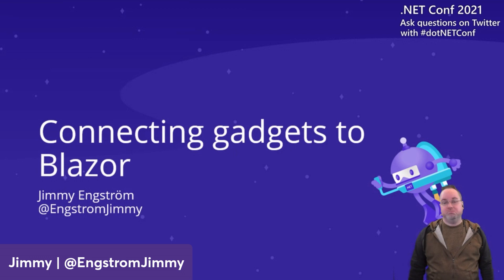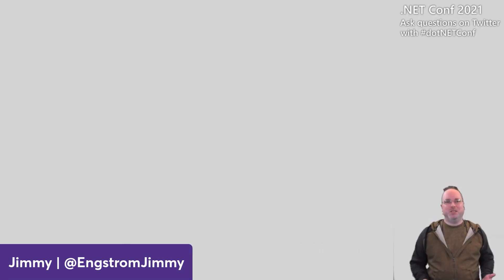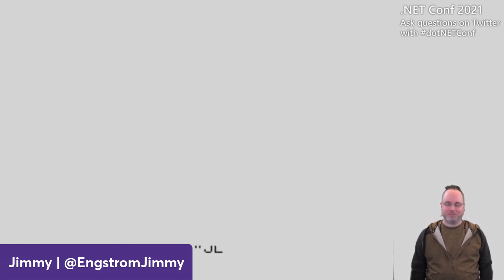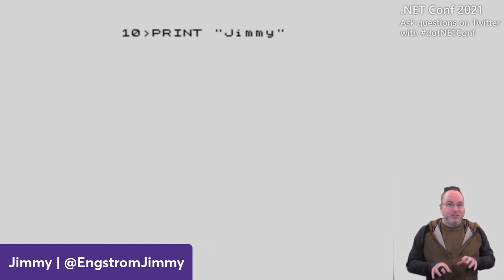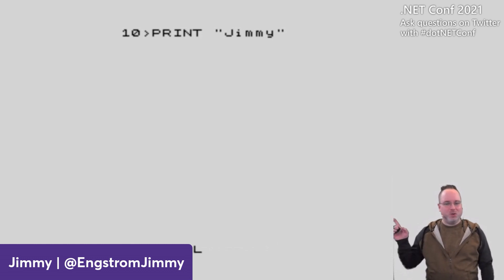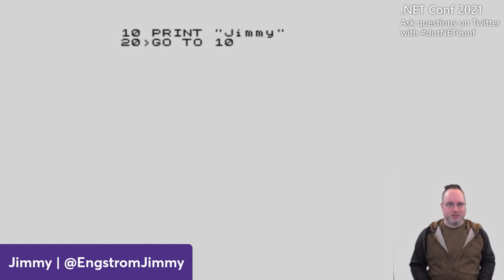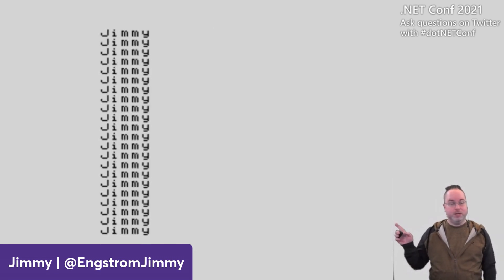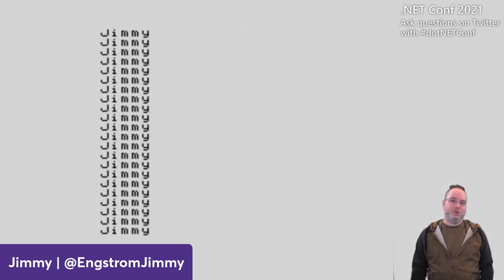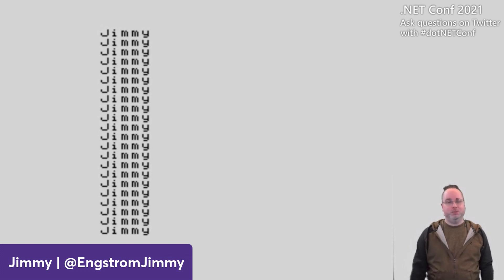As developers, we go through a bunch of different stages, or at least I have. The first stage was when I was about seven years old and I got my first computer. I sat down and wrote: 10 PRINT Jimmy, 20 GOTO 10. That was my code. I made the computer do things — this was my first app, and it's actually available on GitHub. That was the moment when I realized I wanted to become a developer.